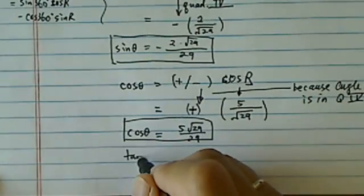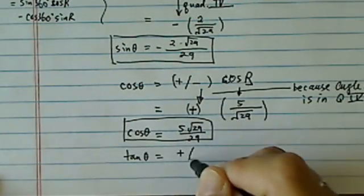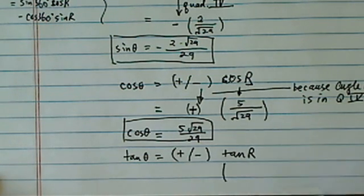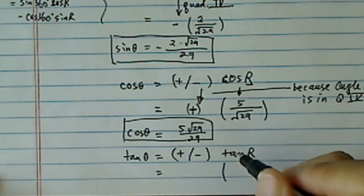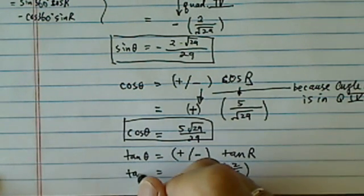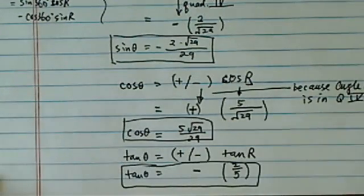One more thing to do. Tangent of theta, once again, it's plus or minus tangent of r. Tangent of r is really easy to do, which is 2 over 5. In quadrant four, it's minus. So my tangent theta is equal to minus 2 over 5.